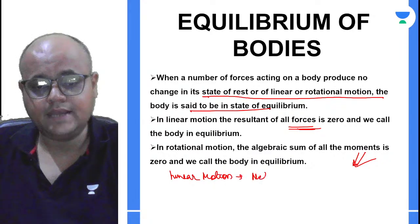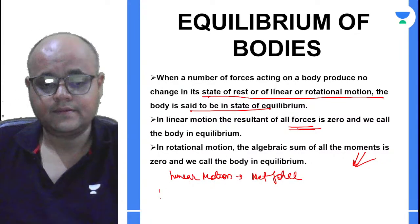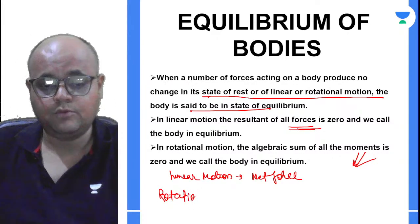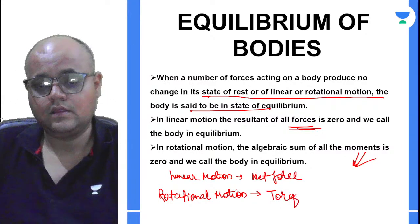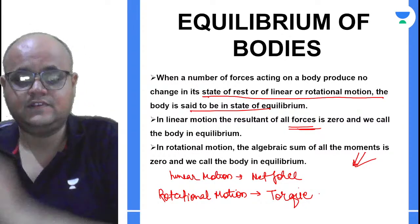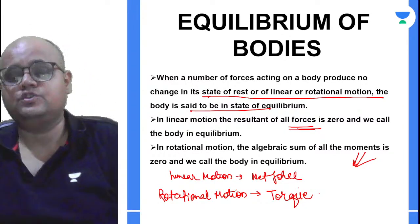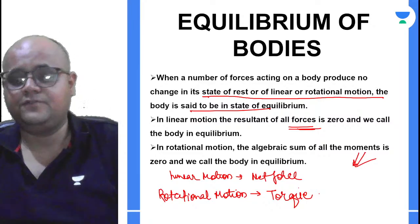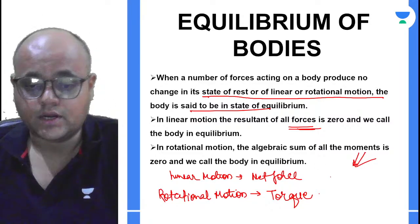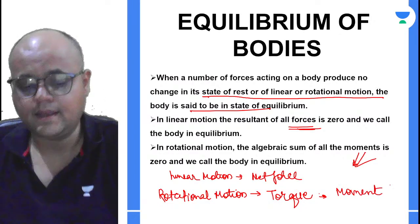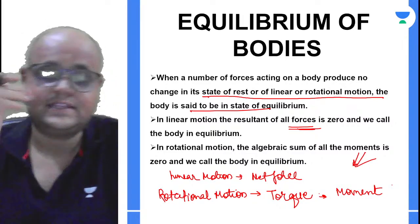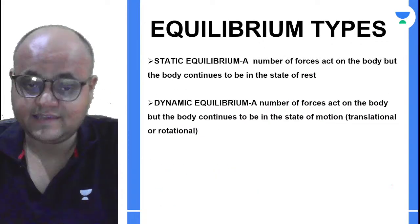When talking about linear motion we refer to net force; when talking about rotational motion we refer to net torque. Net torque is nothing but net moment. This is the key difference between linear motion and rotational motion equilibrium.